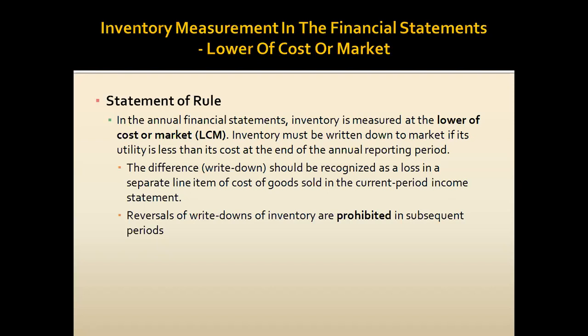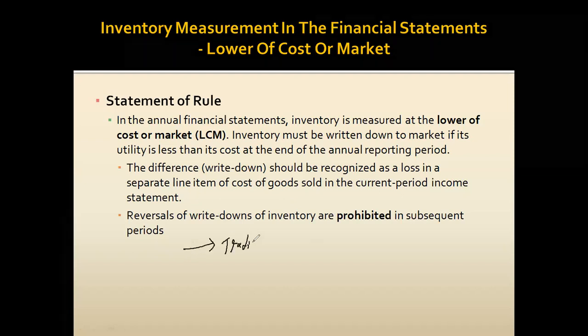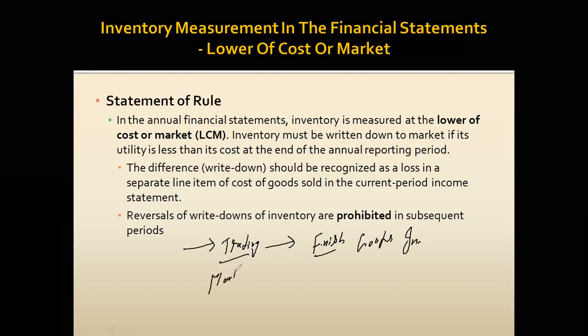Inventory should appear in the financial statements at market or cost, whichever is low. It sounds simple, but the challenge lies in calculating market. Regarding inventory definition: any item bought in the business for reselling purpose is defined as inventory. In a trading concern, we have only one kind — finished goods inventory. In a manufacturing concern, we have three kinds: raw material, work in process, and finished goods inventory.